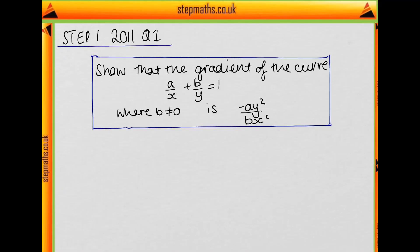This is Step 1, 2011, Question 1. We're asked to show that the gradient of the curve a/x + b/y = 1, where b is not 0, is -ay²/bx².